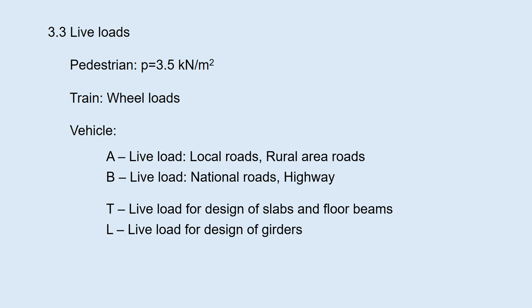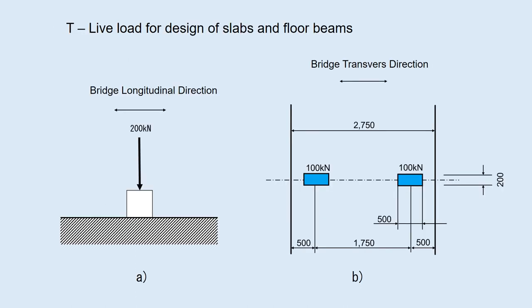The live load have two types. T, live load for design of slabs and floor beams. L, live load for design of girders. The T live load is used to design slabs, stringers, and floor beams. This T load represents the wheel load, which is 100 kN per wheel, as shown in these figures.